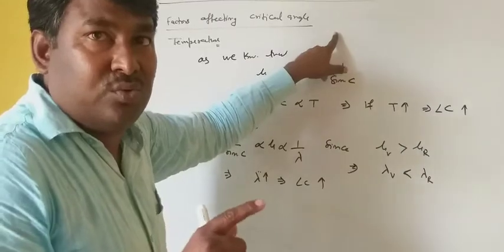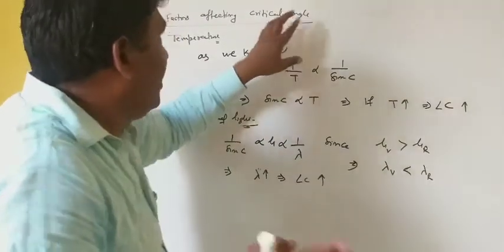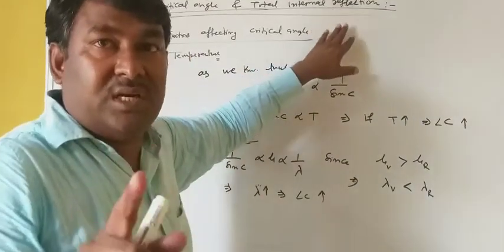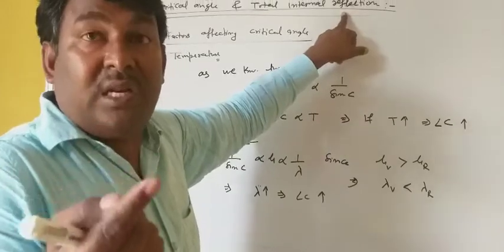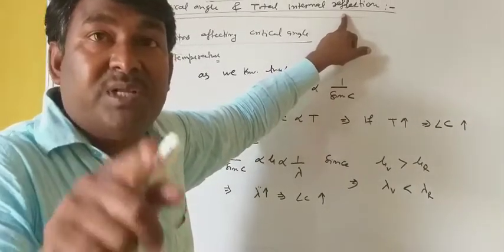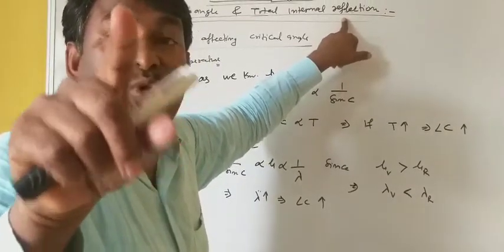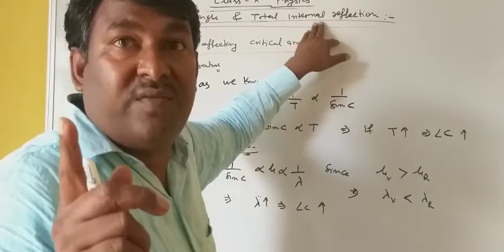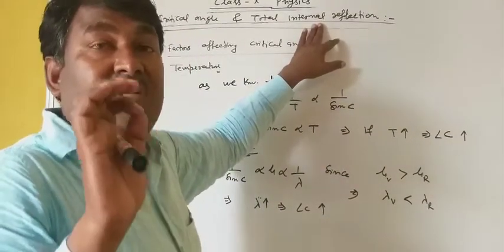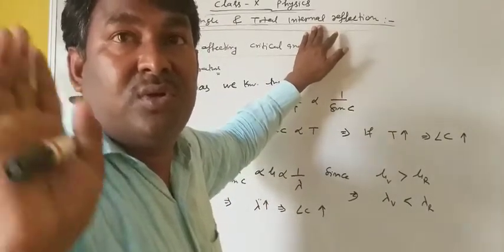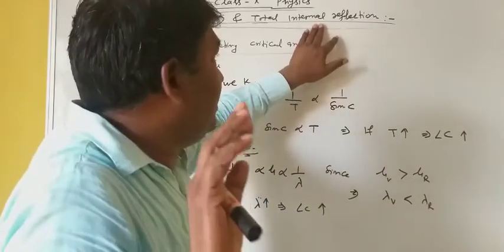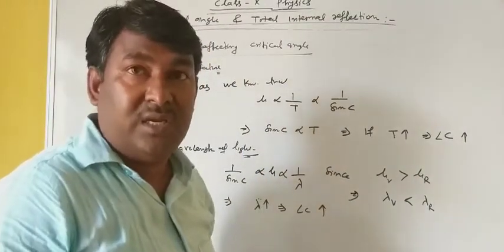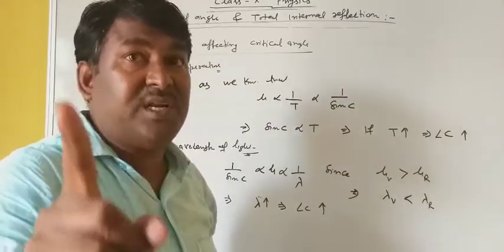One more thing I would like to explain: the essential conditions for total internal reflection. First essential condition is that the light ray must travel from denser to rarer medium — no light should come from rarer to denser. Then only we can talk about total internal reflection. Second essential condition is that the angle of incidence must be greater than the critical angle.